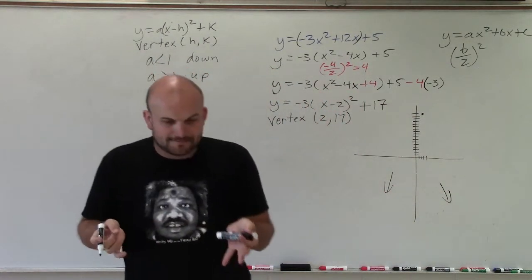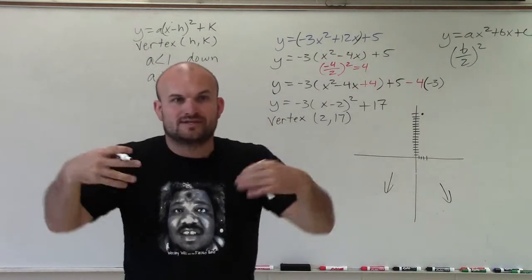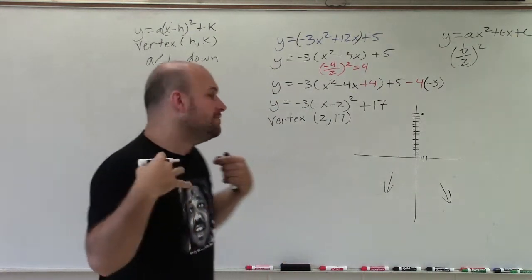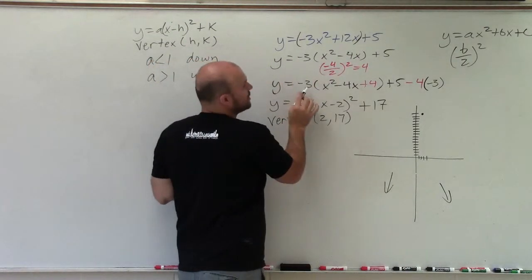However, when we look at the parent graph, we know that the next two points are over 1, up 1, right? Or over 1, down 1, depending if it opens up or opens down. But here, my a has a factor of 3.